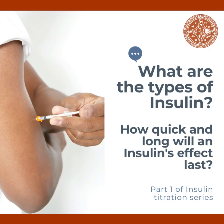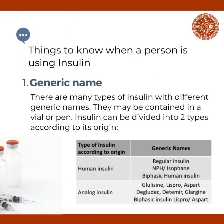What are the different types of insulin? How quick and long will an insulin's effects last? This is Part 1 of the insulin titration series. There are many types of insulin with different generic names; they may be contained in a vial or a pen. Insulin can be divided into two types according to its origin: human insulin and analog insulin. For human insulins, the generic names are regular insulin, NPH or isophane, and biphasic human insulin. For analog insulins, the generic names are glulisine, lispro, aspart, degludec, detemir, glargine, and biphasic insulin lispro or aspart.